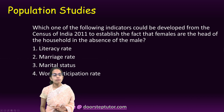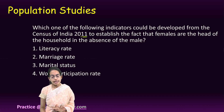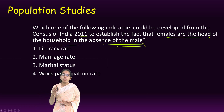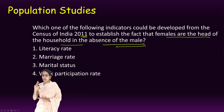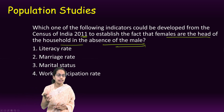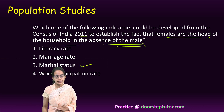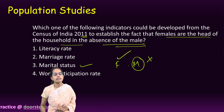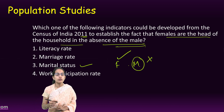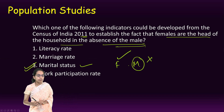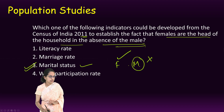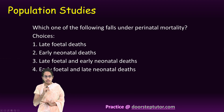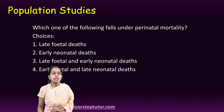The next question asks which indicator from Census 2011 could establish that females are the head of household in the absence of a male. This is slightly applicative — the data would come from information on marital status. If a female and male member are present but the male is absent, the female becomes head of household, and this can be identified directly through marital status.